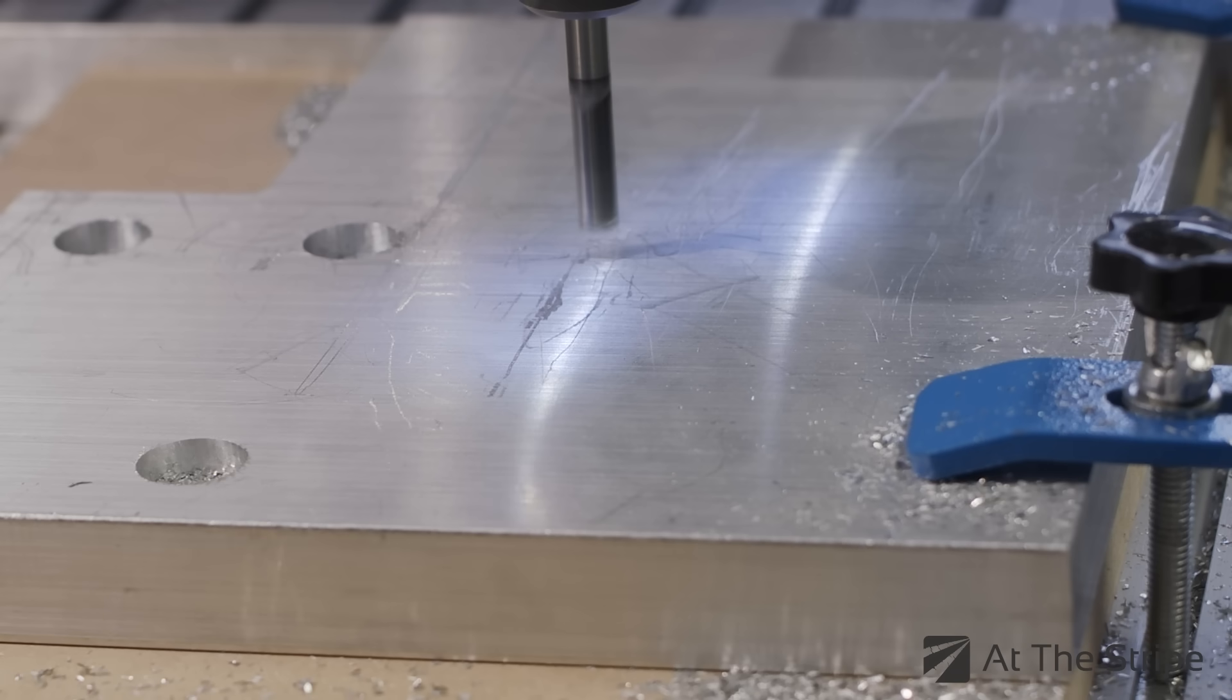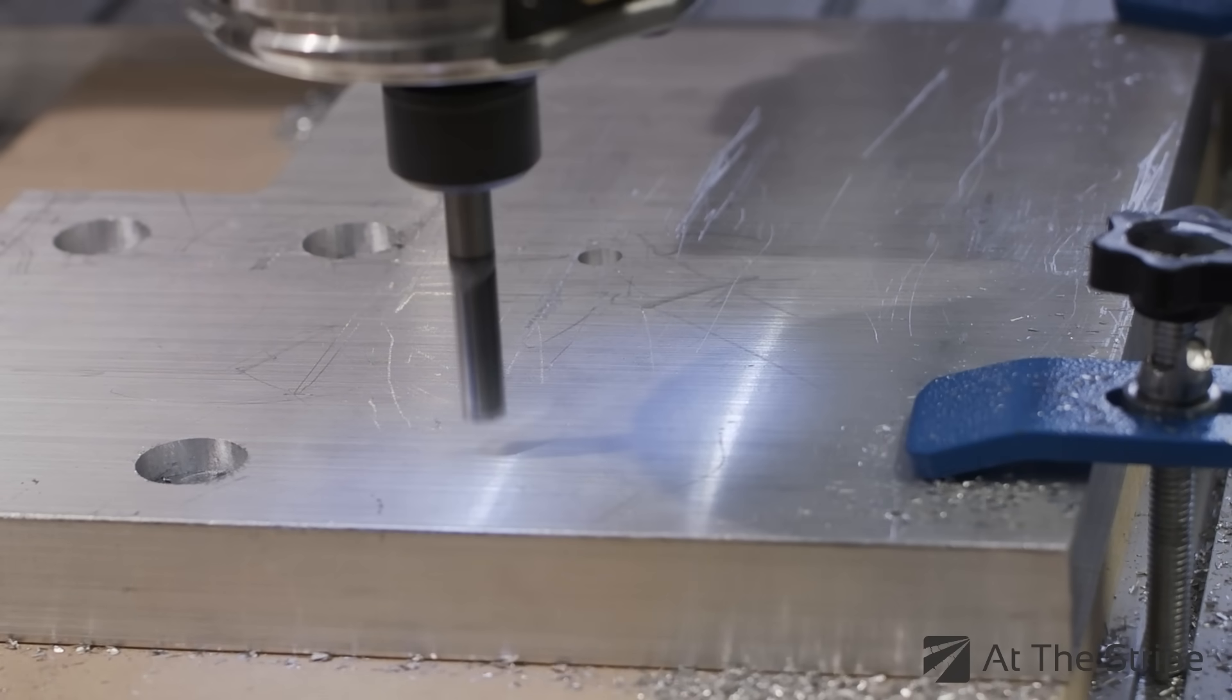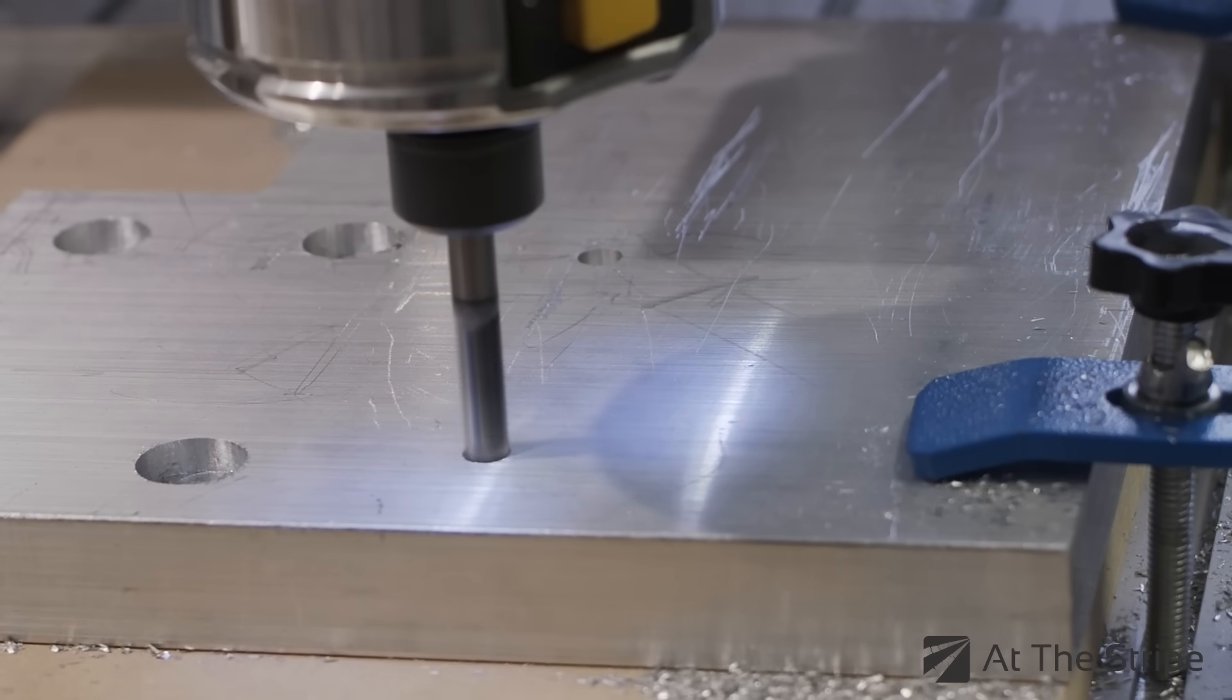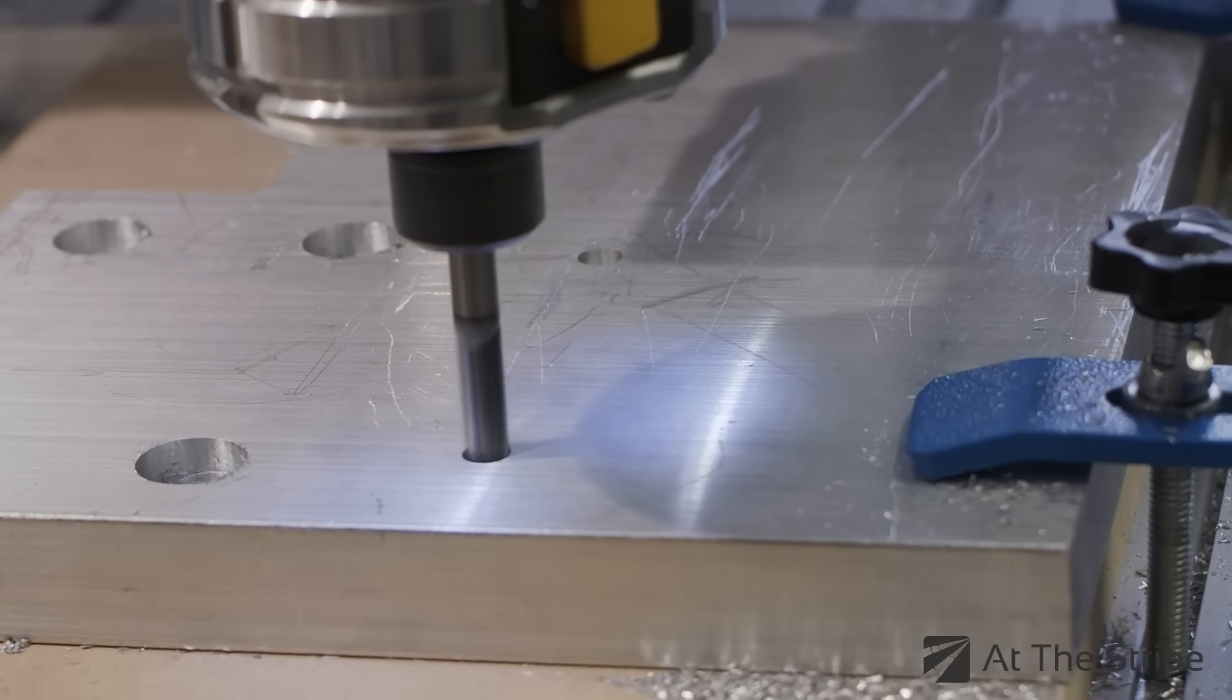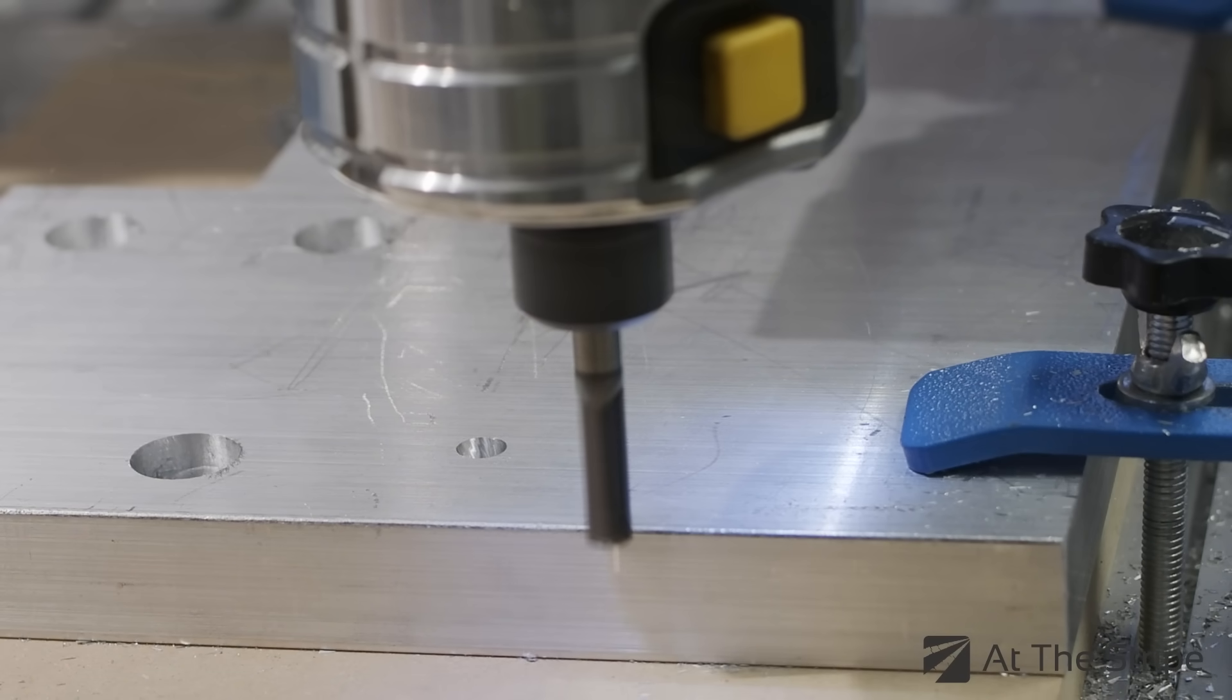And after that's done, we drill two 7 millimeter holes that will be tapped for M8s. And once our holes are complete, we can begin our parting operation.